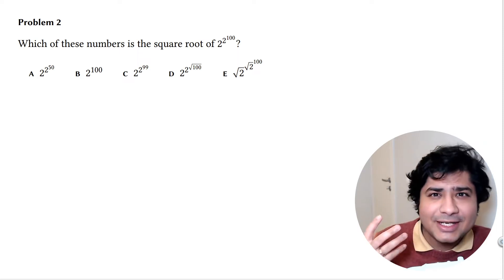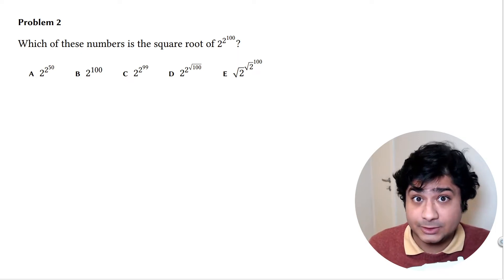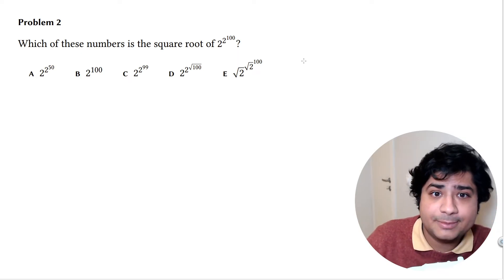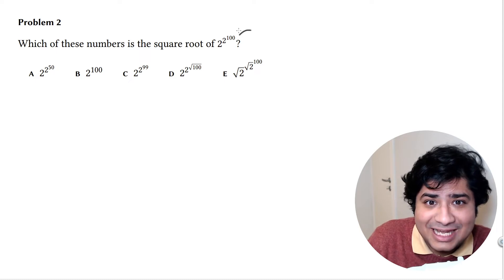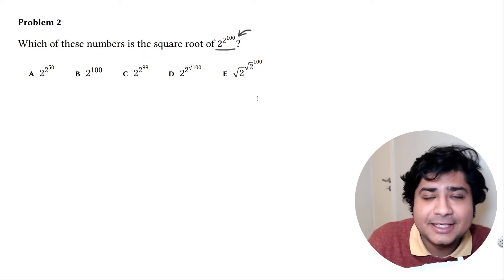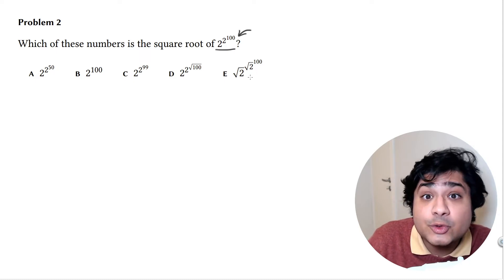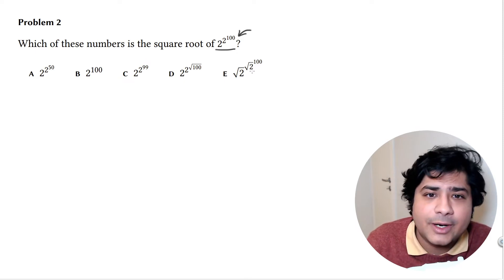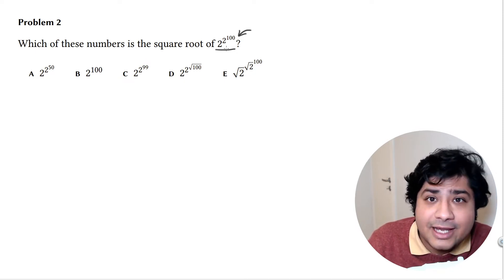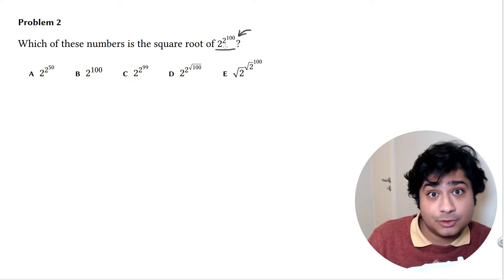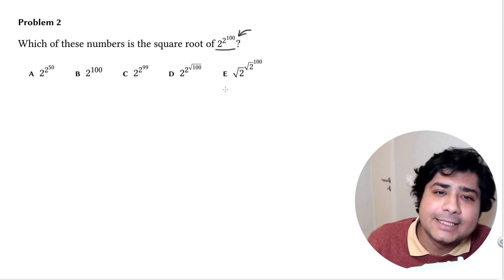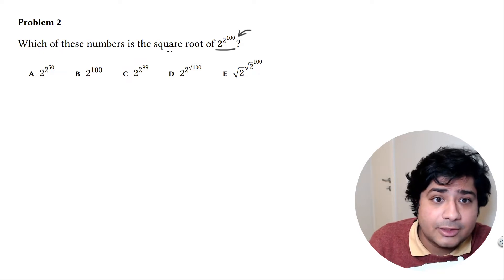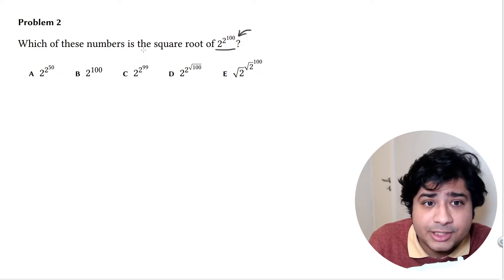First thing: what is it that makes this problem difficult? In my opinion, it's this number right here. Because if it was a number that was 2 to the power of something, that would be easier to deal with. But they go one step further and do 2 to the power of 2 to the power of 100. That's what makes it difficult. The rest of it is pretty straightforward.